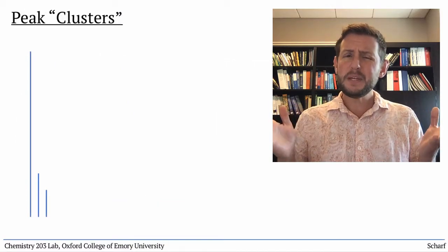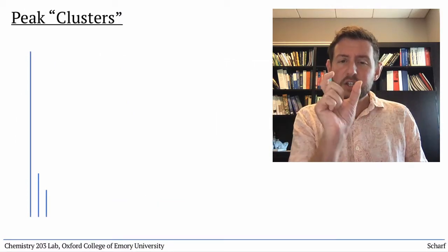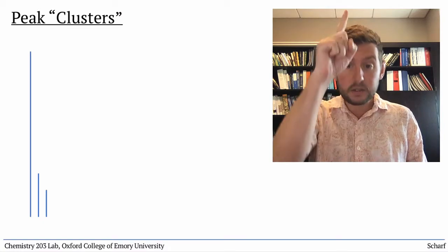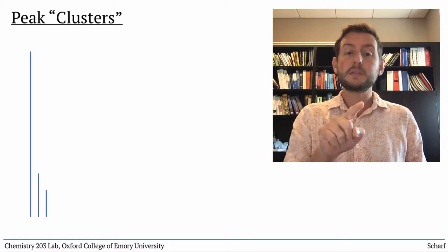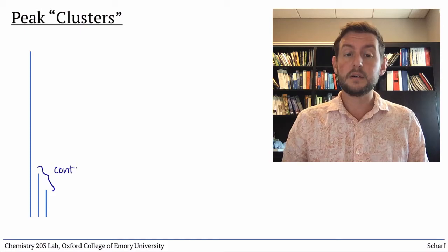But why do peaks show up in clusters? Each cluster usually has one large peak and smaller peaks, one or two masses higher.